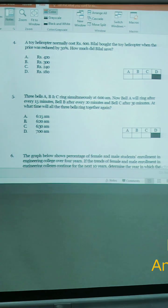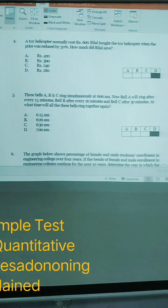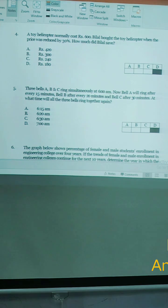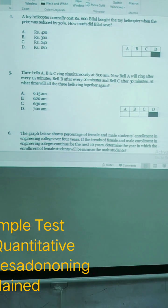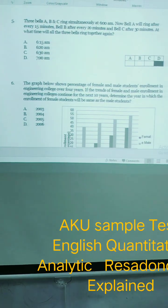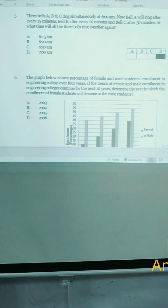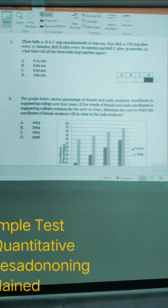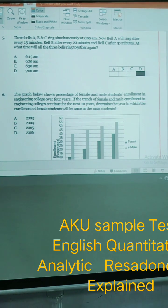Then bell A, B, C are ringing simultaneously at 6 a.m. Bell A will ring every 15 minutes, bell B every 20 minutes, bell C at 15 minutes. At what time will all three bells ring at the same time? So 7 a.m., option D, is the correct one.